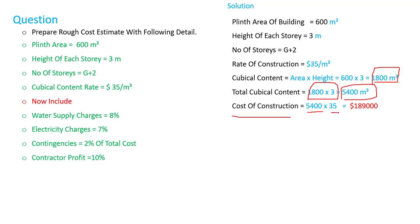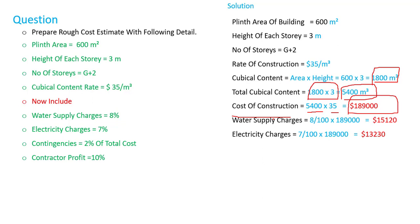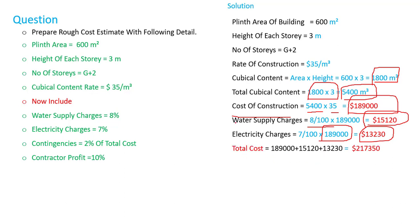That is 5400 multiplied by the unit rate of $35, giving us a total cost of $189,000. Next, we add water supply charges at 8%: 8 divided by 100 multiplied by the cost of construction. Then electricity charges at 7%: 7 divided by 100 multiplied by the total cost of construction, giving us $13,230.